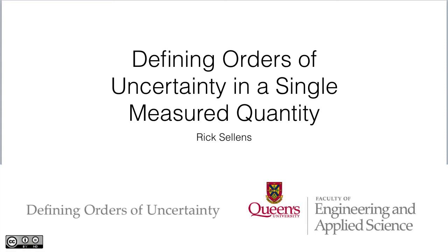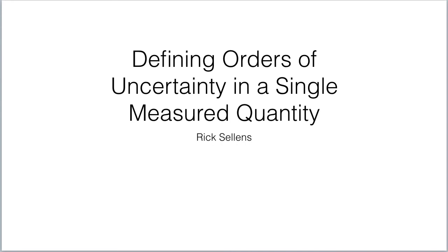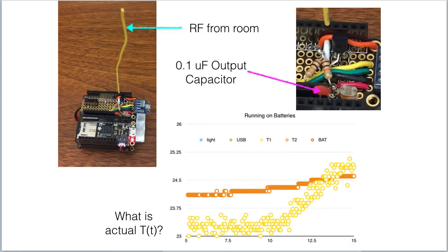If we follow Figliola and Beasley and some others, we can formalize things a little bit more about our uncertainty by defining orders of uncertainty in a single measured quantity. Here's a system where we're using a TMP36, a light sensor, and a BMP180 to make some measurements. Let's focus in on the TMP36. We've used a capacitor here to try to reduce some of the noise, but we're still getting some noisy data from our TMP36 measurement. We'd like to know the actual temperature as a function of time, and we're measuring it with a higher resolution M0 feather board.